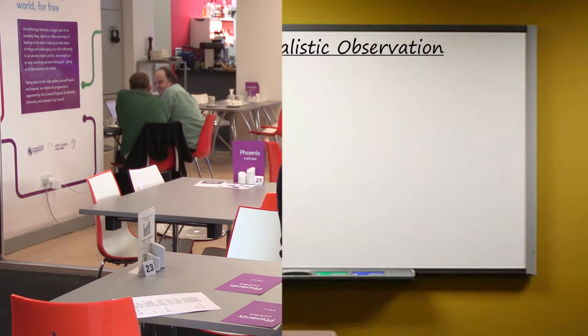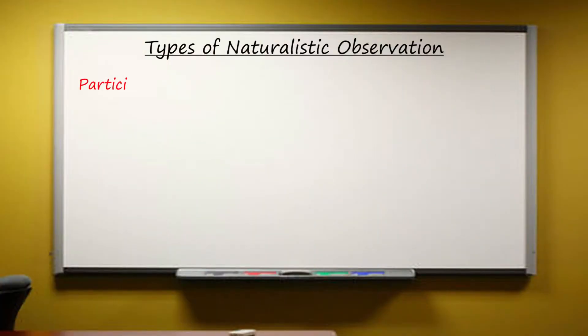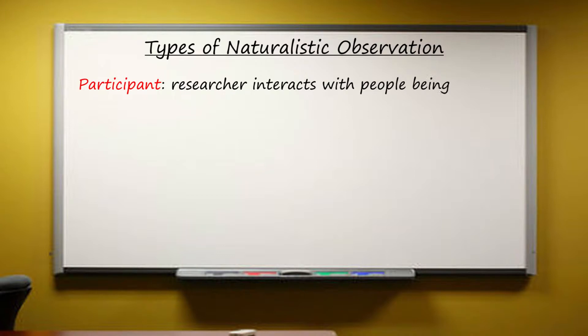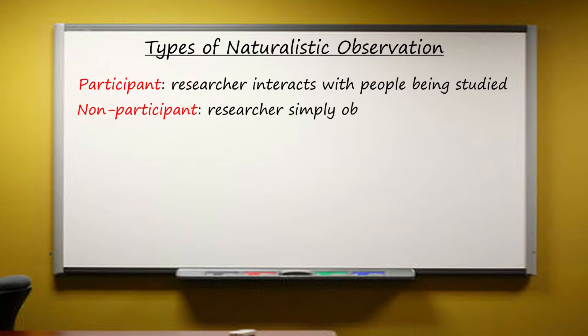But there are different ways of doing this, and it's important to check out that you know what they are. Participant observation means researchers interact directly with the people they're studying, while in non-participant observation they're simply watching.